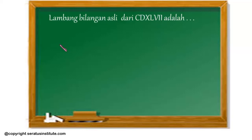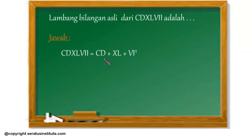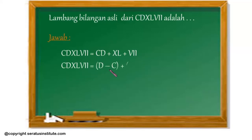Nah Sobat 100 bisa kita jawab ya. Kita tuliskan: CDXLVII sama dengan CD tambah XL tambah VII. Nah kita tuliskan lagi bahwa CDXLVII sama dengan D dikurangi C, ditambah L dikurangi X, ditambah V, ditambah I, ditambah I.